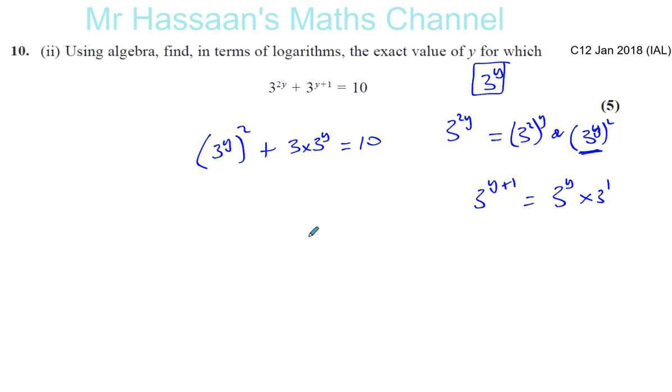Now, what I can do here is I can think of this 3 to the power of y to make life look less complicated. So let me call that something, for example, like x. You can call it a different letter. You can't call it y, of course. So 3 to the power of y is equal to x. So I can say that this is like x squared plus 3 times x equals 10.